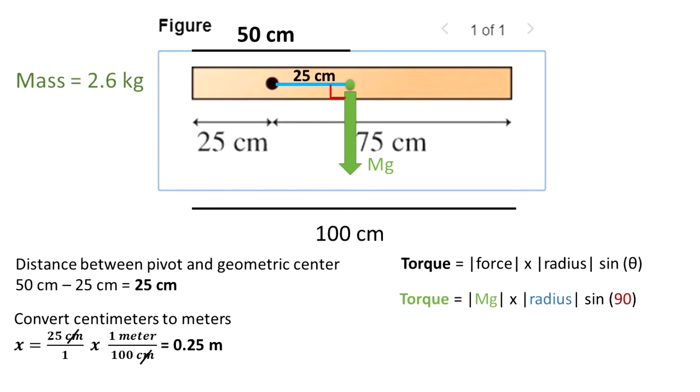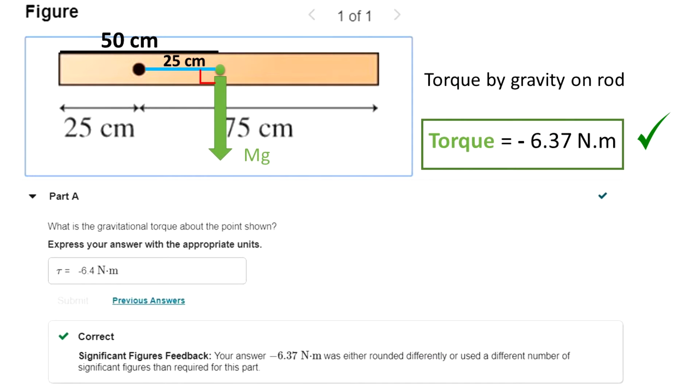We have that torque is equal to mg times the radius times the sin of 90 degrees. 90 degrees is the angle between the radius and the force of gravity. Torque is equal to 2.6 kg multiplied by 9.8 meters per second squared, multiplied by 0.25 meters of the radius, multiplied by the sin of 90 degrees. We know that sin of 90 is equal to 1. And we get that our torque is negative 6.37 Nm.